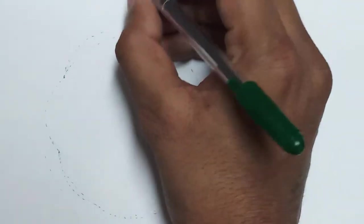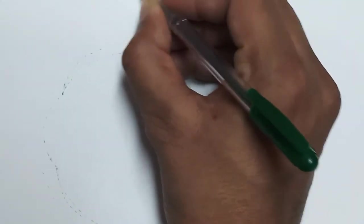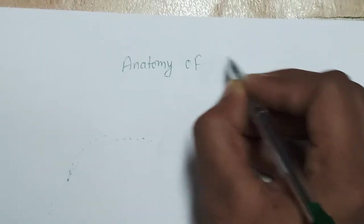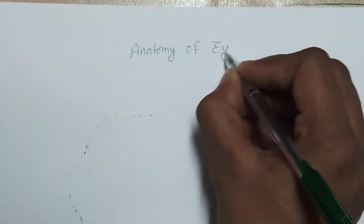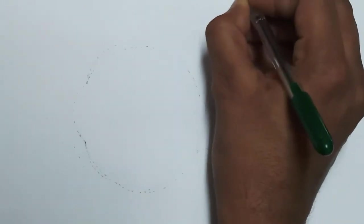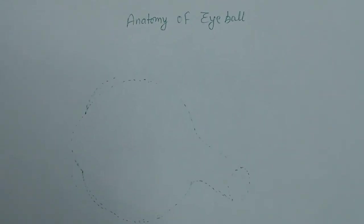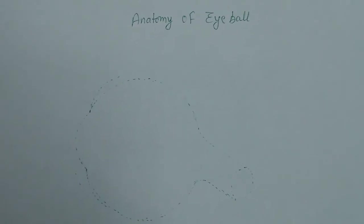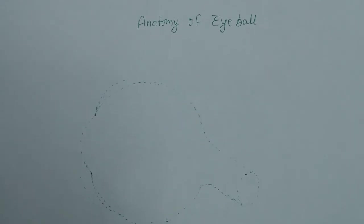Hello friends. Today we will study about the anatomy of the eyeball. First of all, we will study about the structures of the eyeball — how many structures are present in the eyeball, and what are their functions.